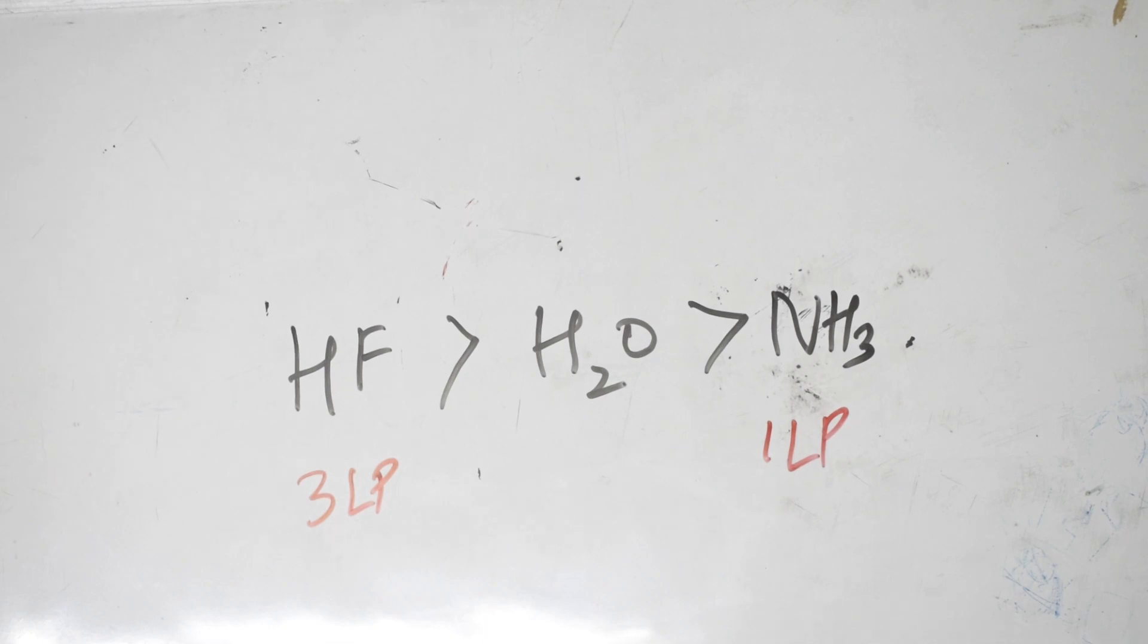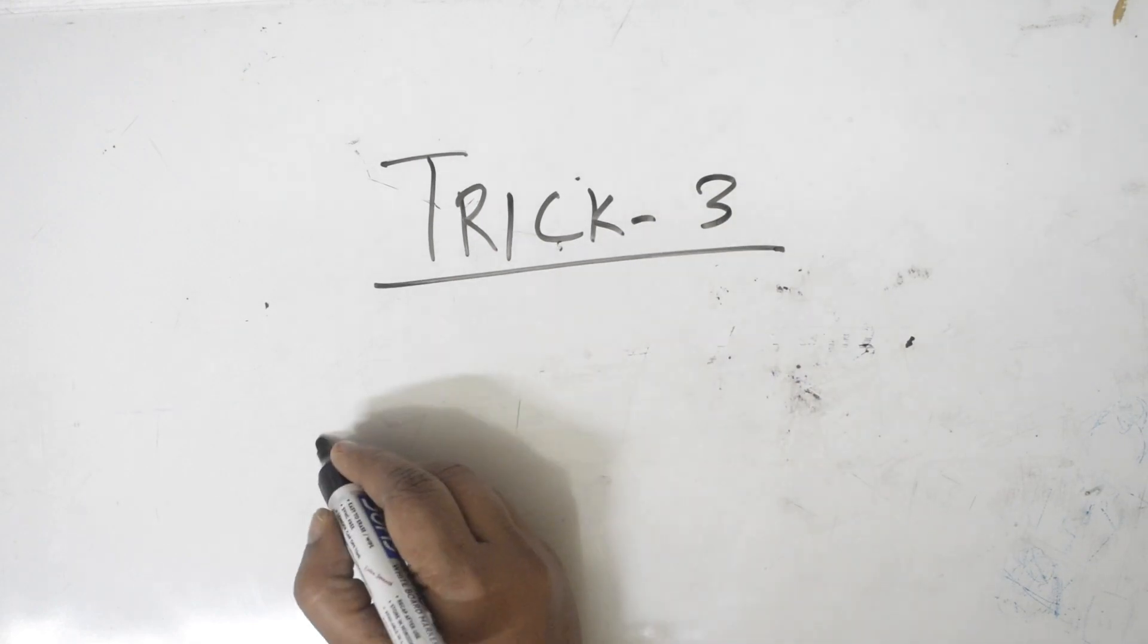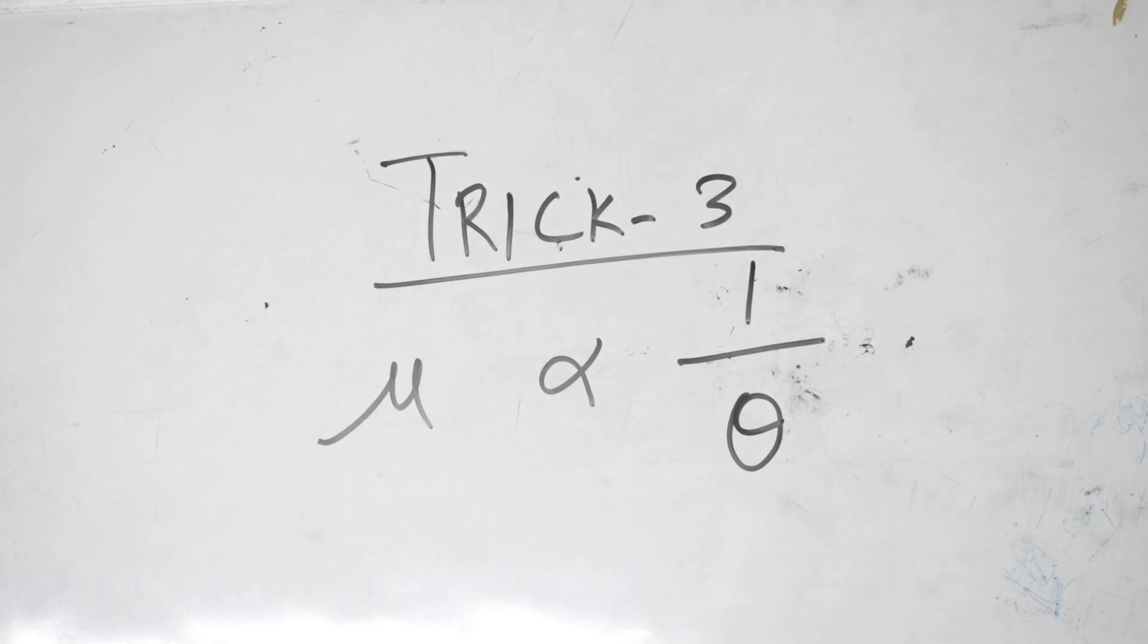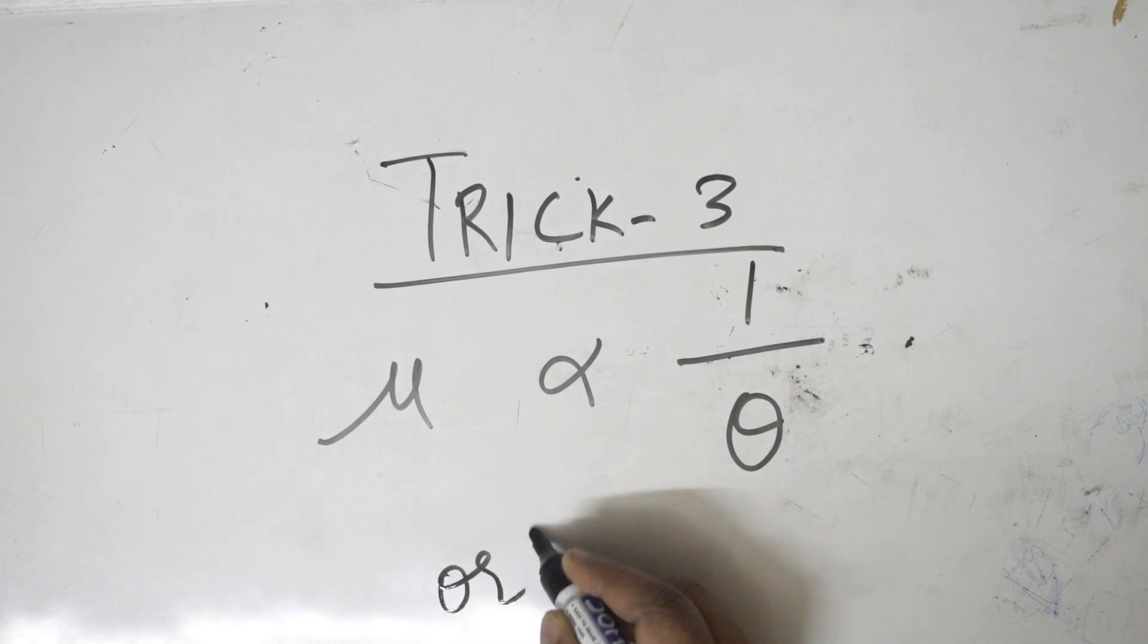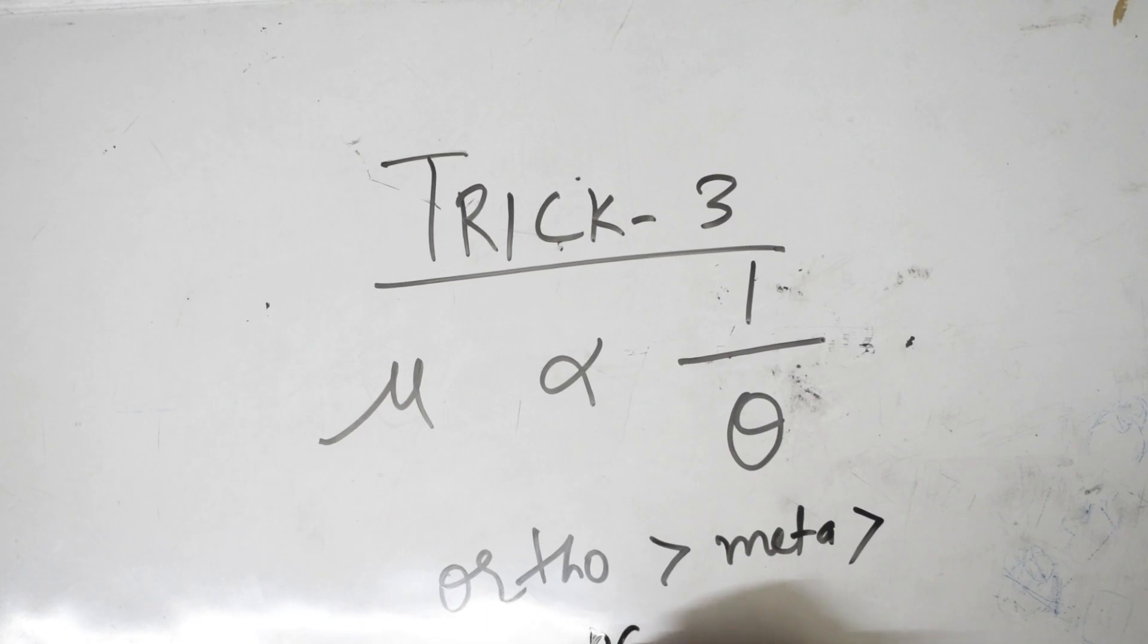I'll do one more trick and then I'll meet you again with more number. Let's see trick number three. Remember, dipole moment is inversely related to one by theta. What is this theta? The angle. The angle, how it is rotating, how is the angle rotating. Or indirectly if I have to say, ortho are having more dipole than meta, having more dipole than para.